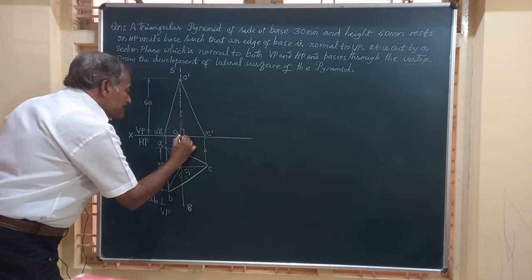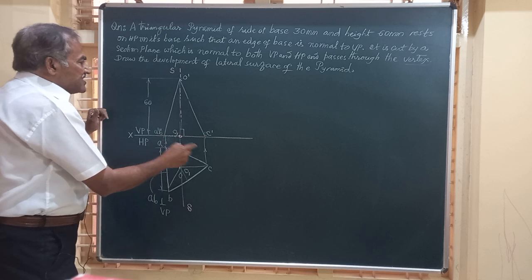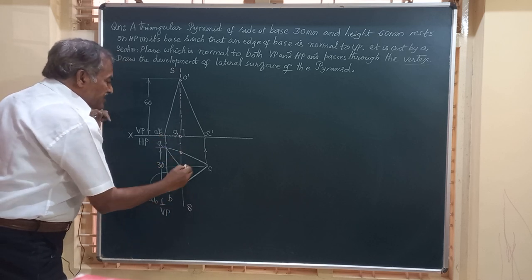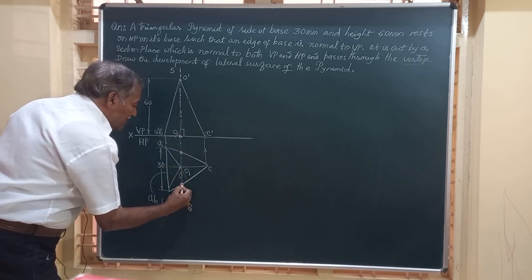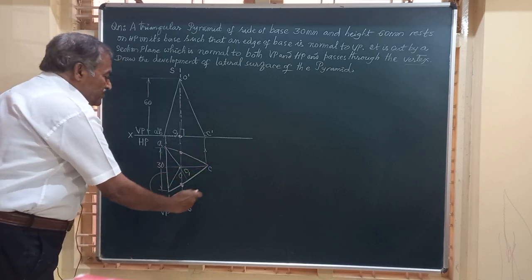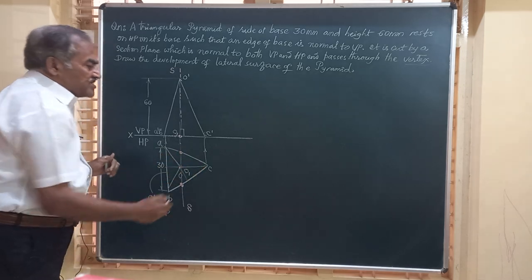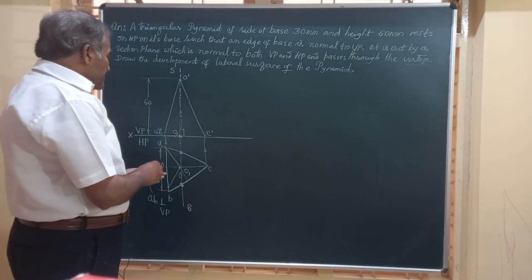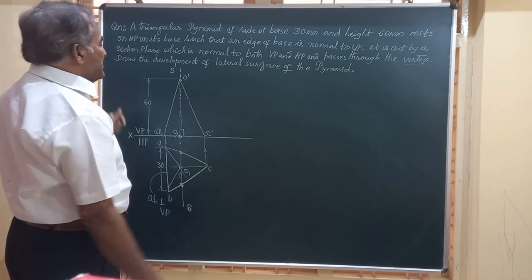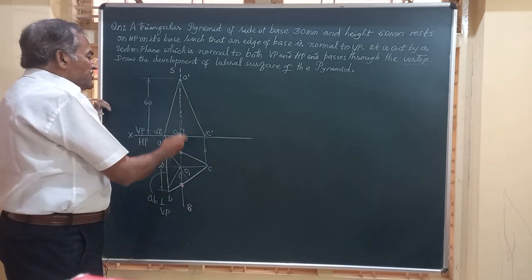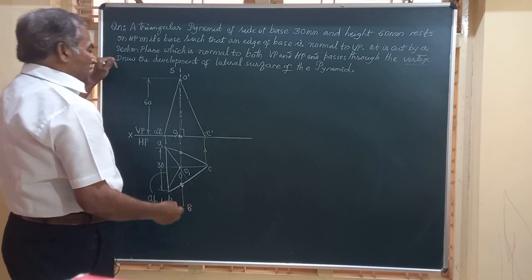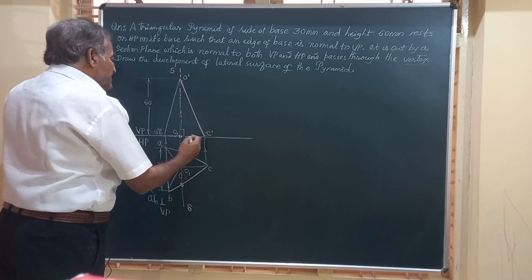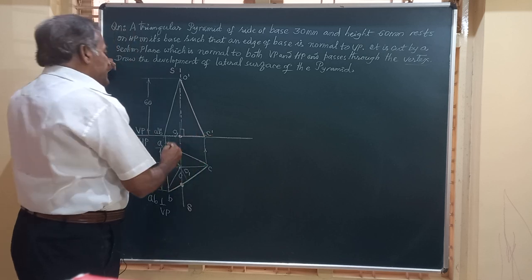This section plane SS passes through the vertex and cuts the base edges. It is cutting base edge AC and base edge BC at certain points. The distances measured at those cutting points are the true actual measurements. The problem asks us to draw the development of the lateral surface of the pyramid, so after cutting we retain the right side part.